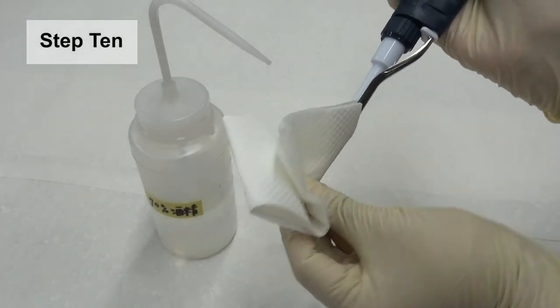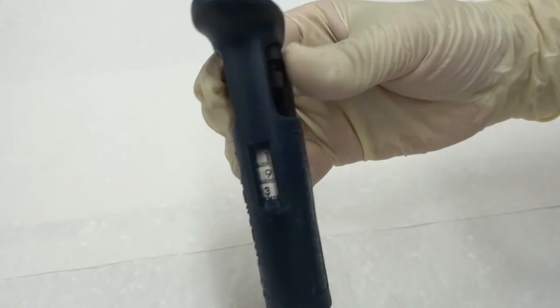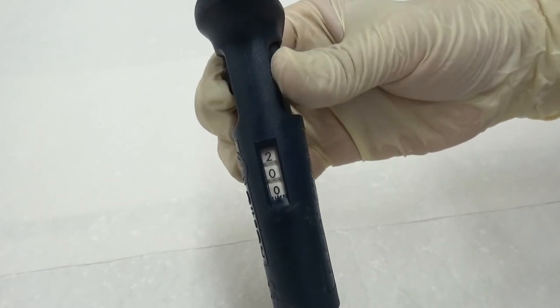Step 10: Clean the pipette immediately after use. Set the volume adjustment dial to its upper limit. This shall protect the internal parts from elastic fatigue.